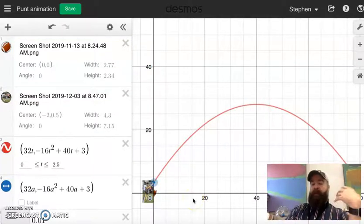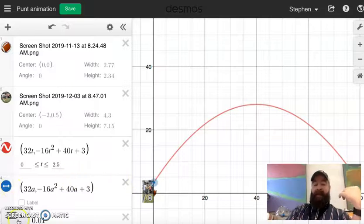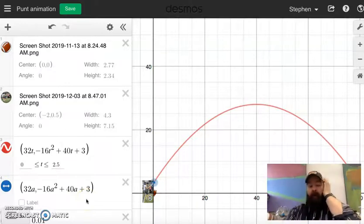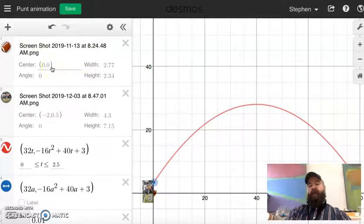Now this thing is centered at the origin and what I'd really like it to be centered at is on the point here that represents the flight of the ball. So if you look at the dialogue underneath the thing for the football, you see how it's got the center here, zero, zero, that says it's centered at the origin.